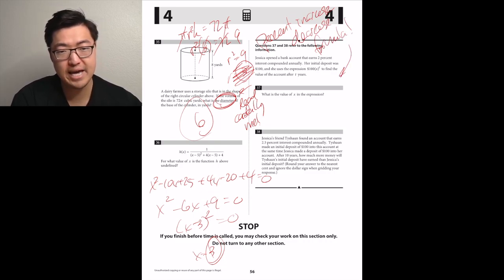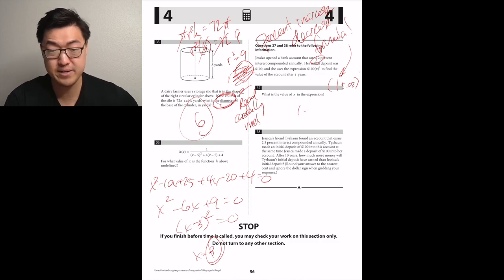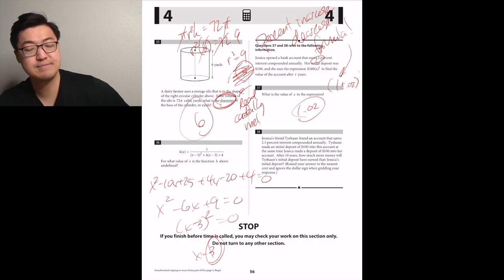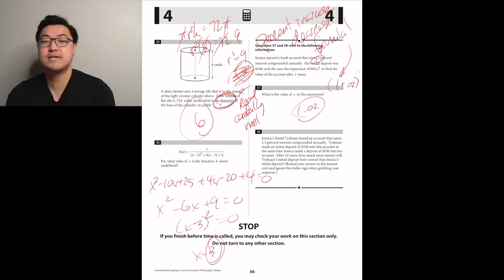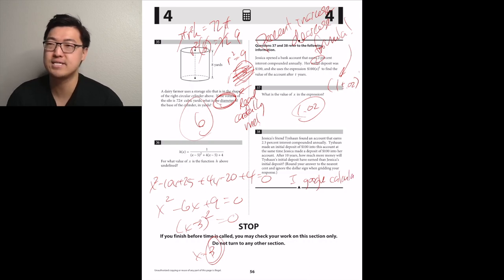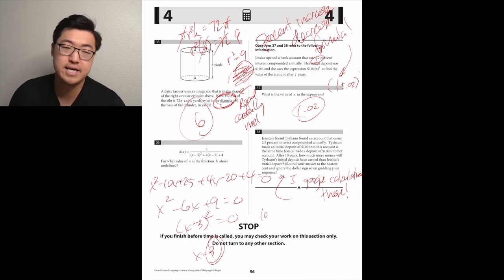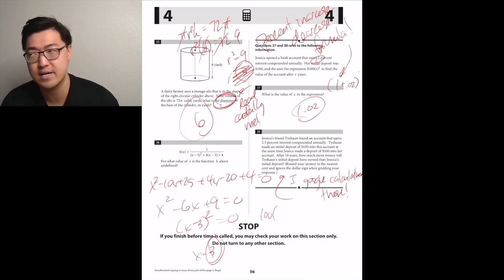Jessica opens a bank account that earns 2% interest compounded annually. Her initial deposit was $100 and she uses the expression 100 times x to the t to find the value of the account after t years. What's the value of x in the expression? Percent increase formula means that if you increase by 2%, then you would mark that as 1 plus 0.02. If you increase by 10%, then you would want to show that as 1.1 because you would mark it as 1 plus the 0.10. So if this increased by 2%, then we're going to have 1.02 being multiplied to the 100. So I think 1.02 is the answer.